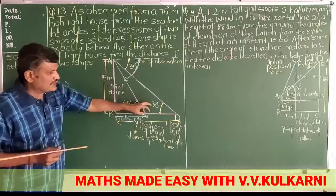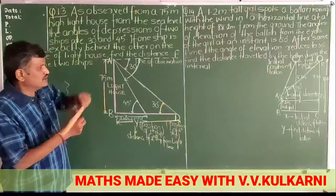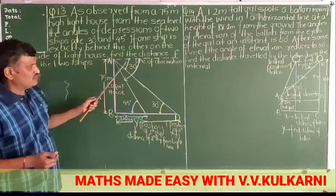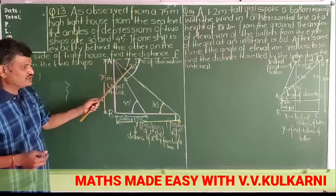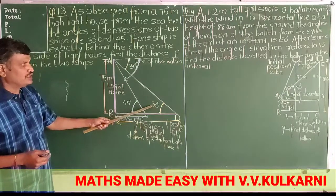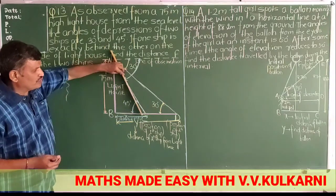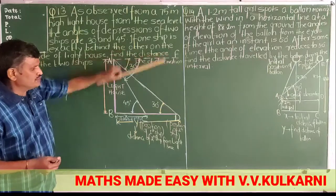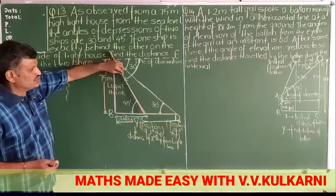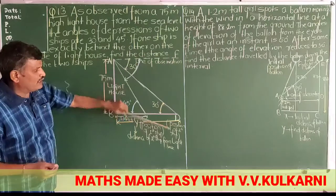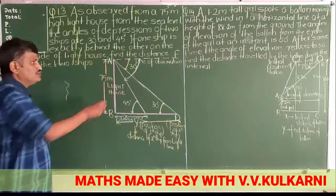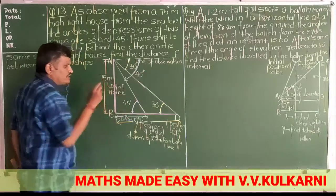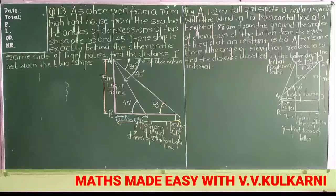Toh yeh dono alternate angles ho jayenge. Z formation ho raha hai — toh yeh 30 hai, toh yeh bhi 30 hai. Aur yahaan par woh 45 degree bata raha hai, toh yahan bhi — this is the line of observation, both lines are parallel, aur yeh transversal ka kaam kar raha hai. Toh agar 45 degree hai, toh yeh bhi 45 degree hoga — alternate angles hoga.